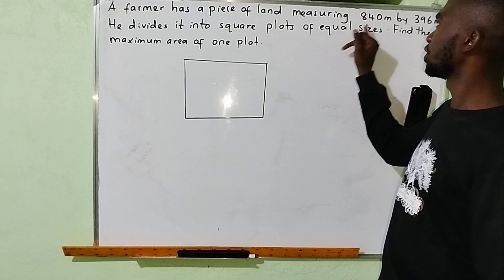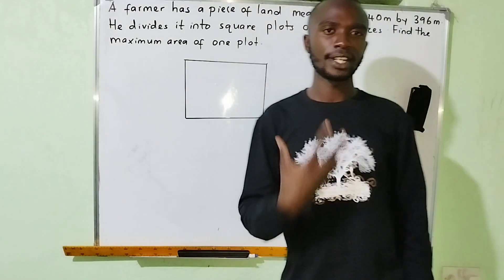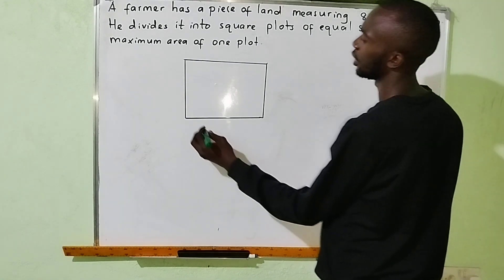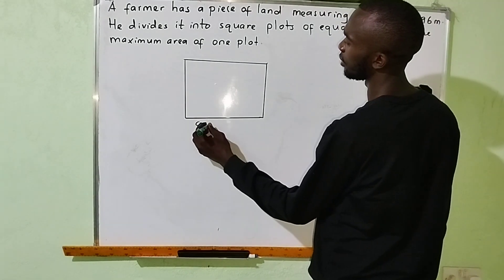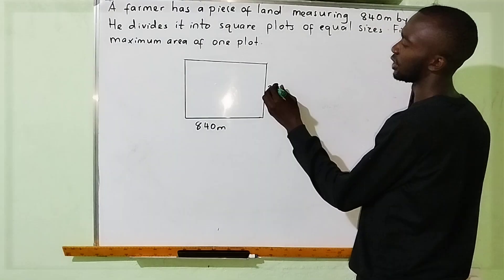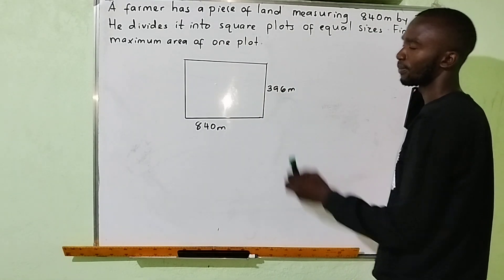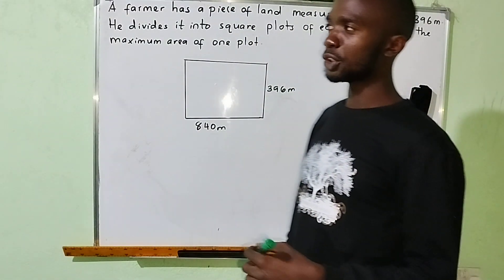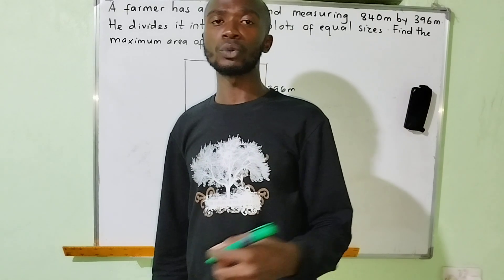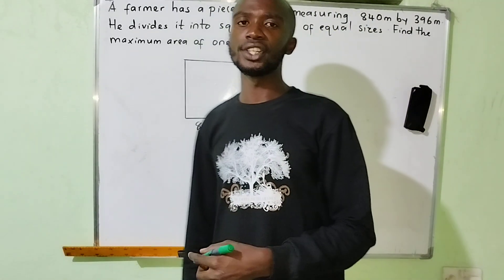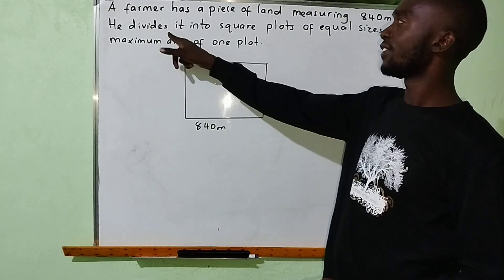Now, because it is measuring 840 by 396, the shape of this is in the form of a rectangle. So the length is 840 meters and 396 meters is the width. Now we are going to understand how to solve this question. He divides it into square plots.